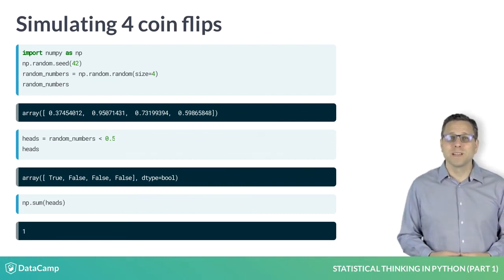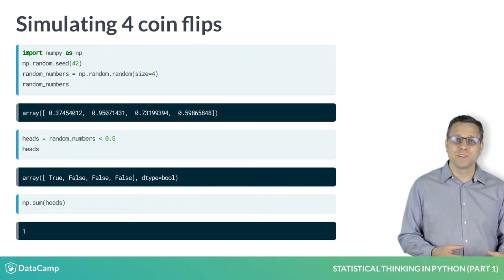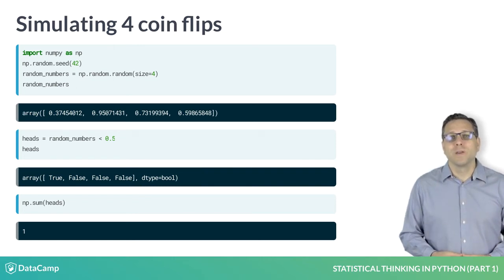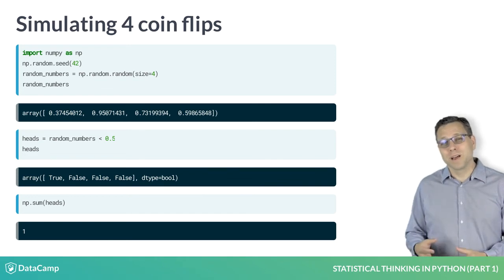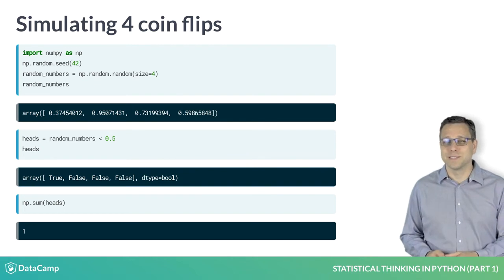We can show that explicitly using the less than operation, which gives us an array with the Boolean value true for heads and false for tails. We can compute the number of heads by summing the array of Booleans, because in numerical context Python treats true as 1 and false as 0.